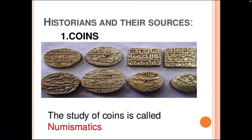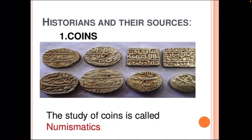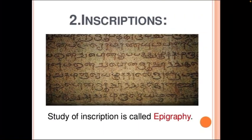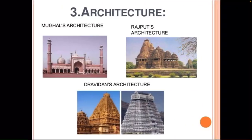Historians and their sources — that means the sources through which historians studied history. The first one is coins. The study of coins is called numismatics, and they are used to tell about the period they belong to. The second is inscriptions. The study of inscriptions is called epigraphy, where historians try to study the original inscriptions. Then there is architecture — it could be Mughal architecture, Rajput architecture, or Dravidian architecture. These buildings constructed at that time tell a lot about the period.